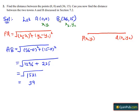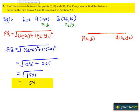Hence, the distance between the two points A(0, 0) and B(36, 15) is 39 units.